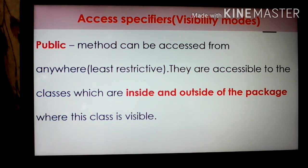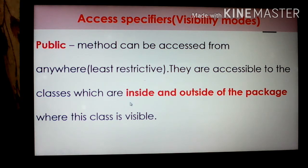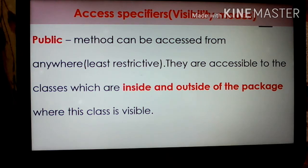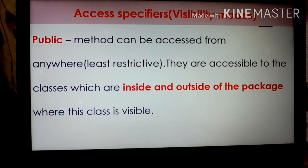The first one is public. A public method can be accessed from anywhere — that is the least restrictive visibility mod. They are accessible to classes inside and outside of the package where this class is visible. This is the simplest way to provide access to the class members. However, we should be careful when using this keyword with class variables, as anybody can change the values.